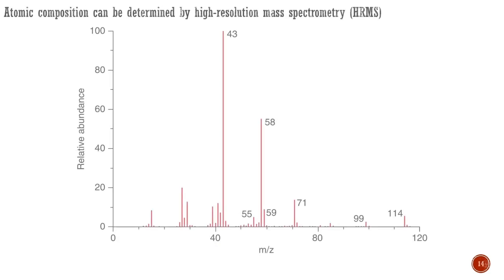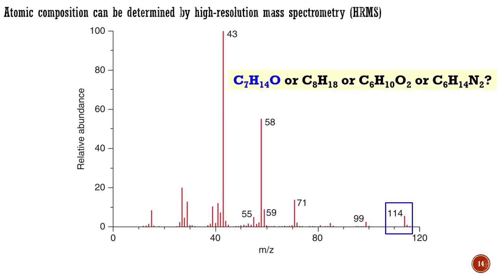Ordinary mass spectra tell us the molecular weight of the molecule. We could easily see, for example, that the bee pheromone had molecular weight 114 even without knowing its structure. When I revealed it as C7H14O, I had to use other information to infer this, because 114 could also be many other things, such as C8H18, C6H10O2, or C6H14N2. These different atomic compositions for the same molecular weight can nonetheless be distinguished if we know the exact molecular weight, since individual isotopes have non-integral masses, except carbon-12 by definition.